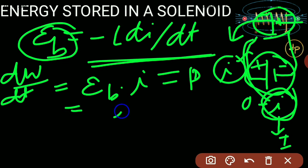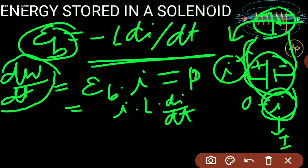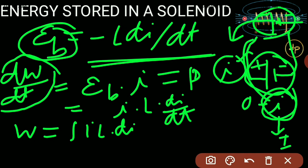So we get dW/dt equals I into L dI/dt. We then integrate this to get the total work done to establish a particular current. The full work done is the integral of I·L dI, and dI changes from 0 to capital I, which gives us L times I²/2.